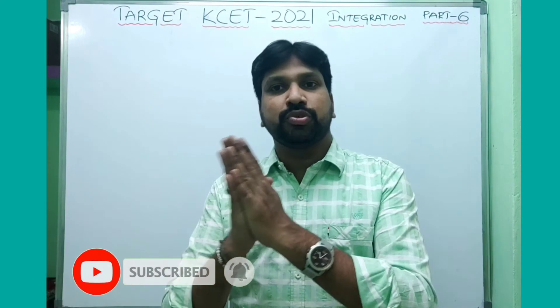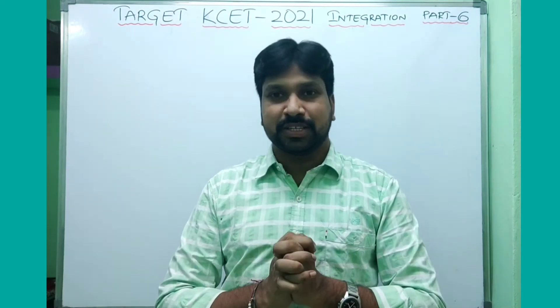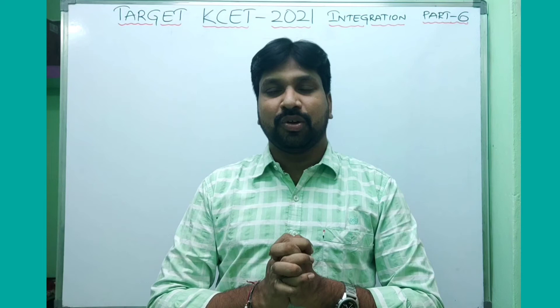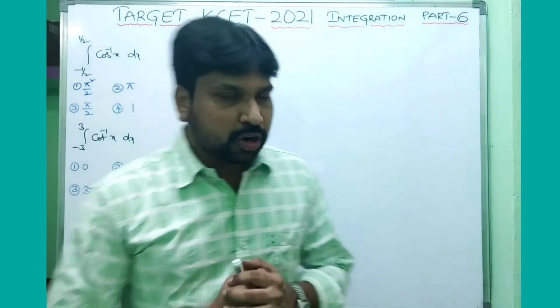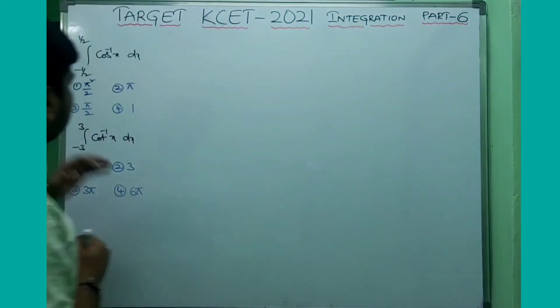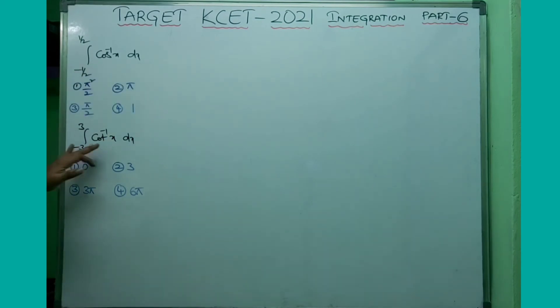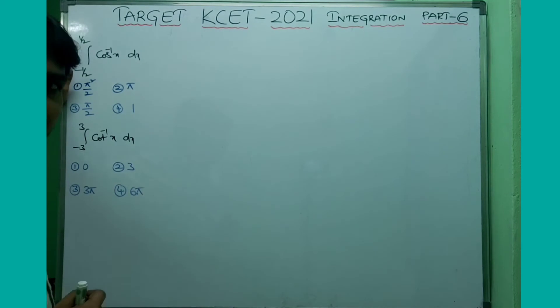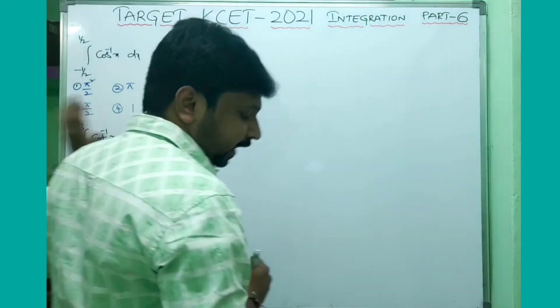Which kind of questions are they asking in previous KSET examinations? Let us start our session. In this Part 6, the first model is integral of cos⁻¹x dx, and integral from minus 3 to 3 of cot⁻¹x dx. This is given in 2020 and this is given in 2019.